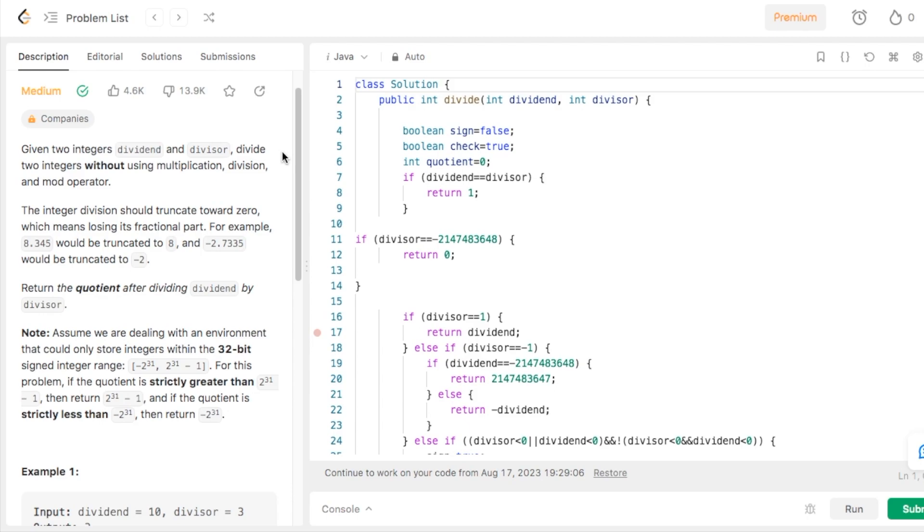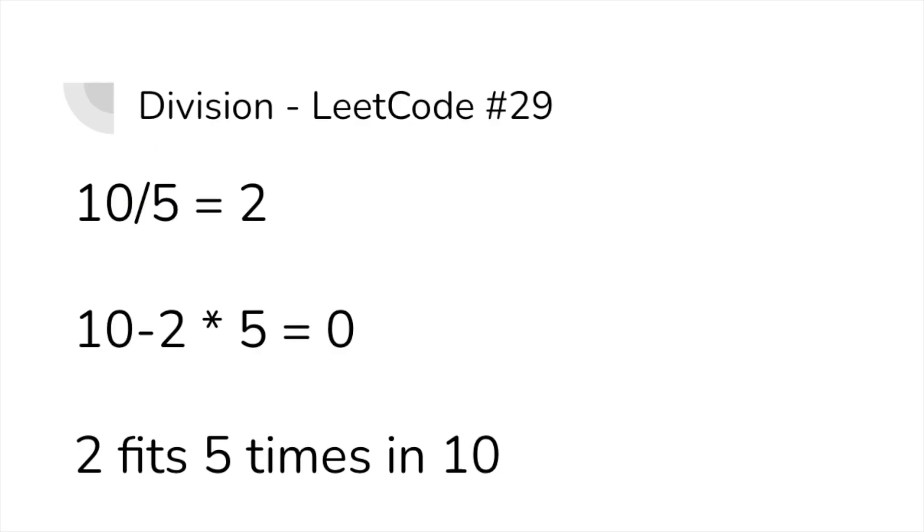To deal with this problem, let's think about how we want to solve this. When you divide two numbers, for example 10 and 2, we get 5 as the answer. But what does the 5 mean? It means that you can fit 2 inside of 10 five times.